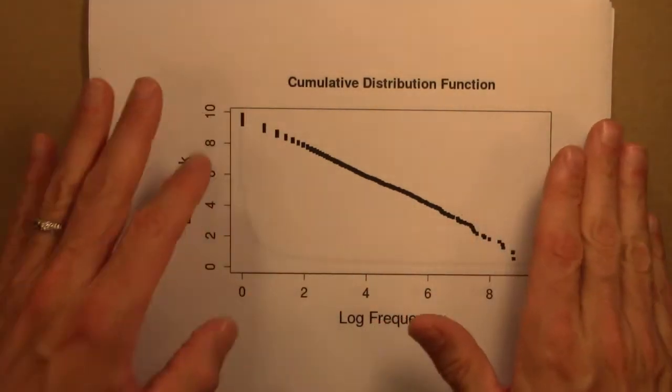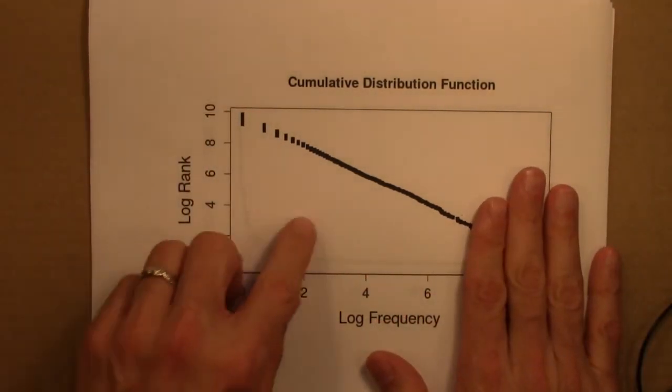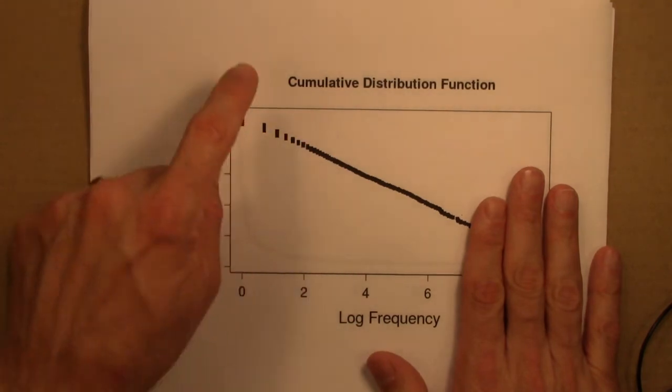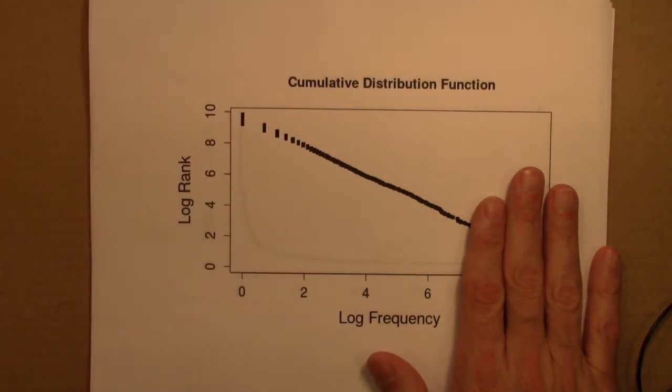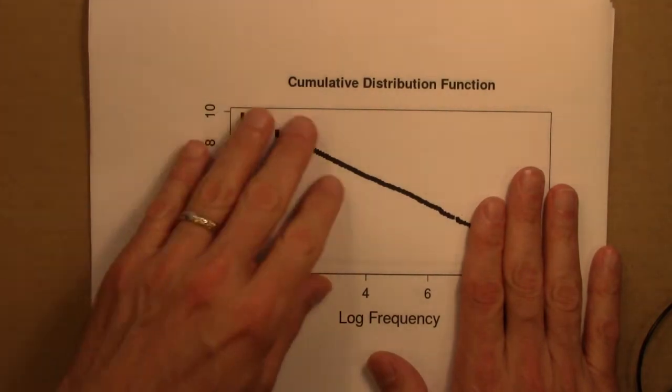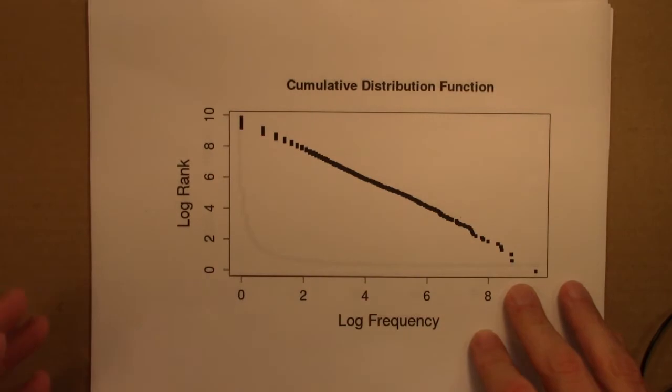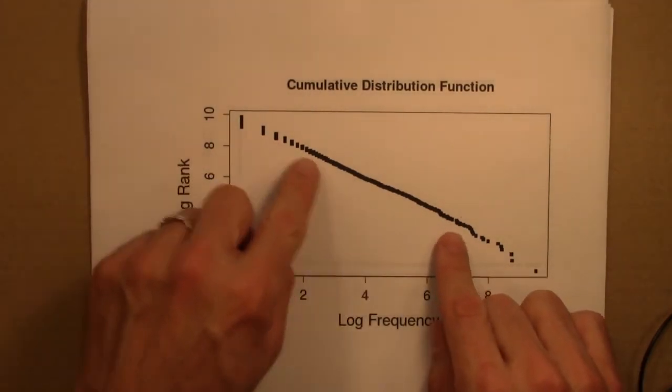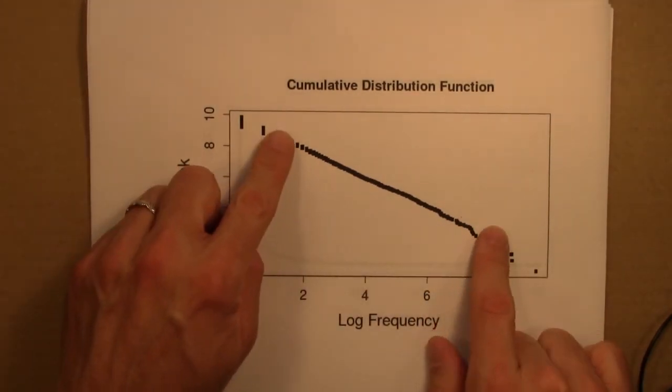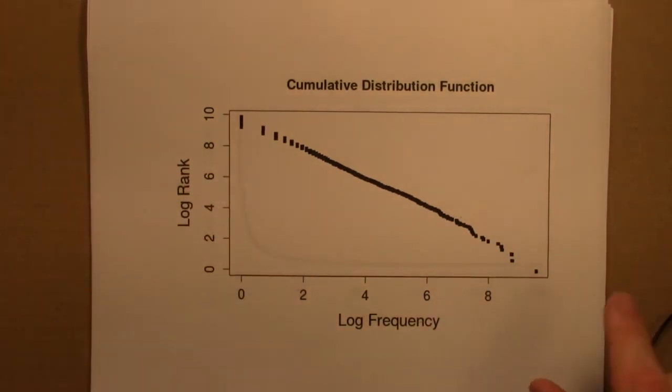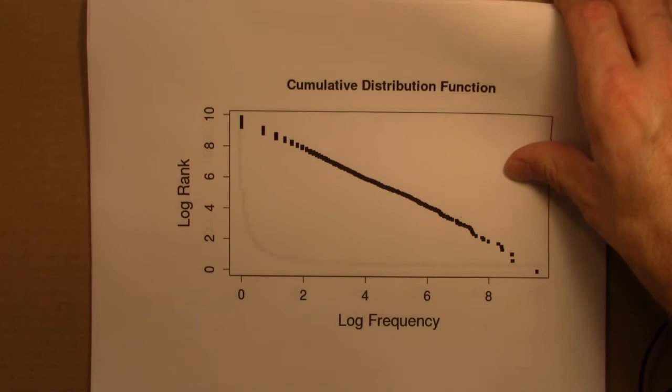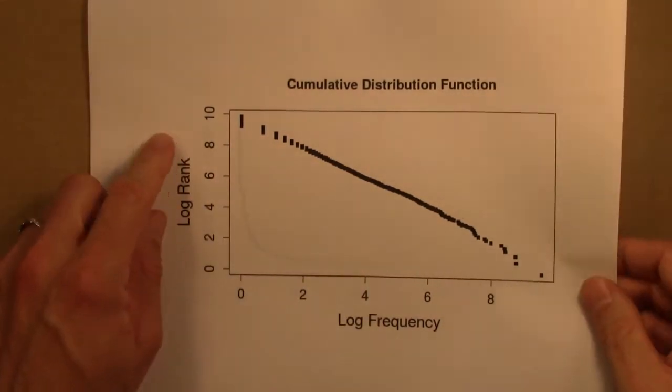And so we could figure out the slope of this and then use that information to estimate the exponent for the cumulative distribution function, which in turn we can use to figure out the exponent for the distribution function itself, the probability. So we'll talk about the best ways to do that. And in fact, the best way to do it turns out not to be to do what I just described in the next couple of videos. But for now, I just want to kind of get us used to looking at these sorts of plots.